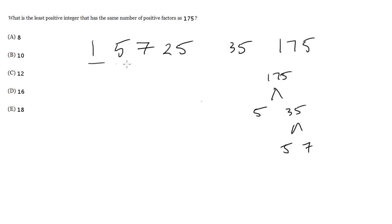Either way, we see we've got 1, 2, 3, 4, 5, 6 total factors. So we want the least positive integer that has the same number of factors, in other words, 6.